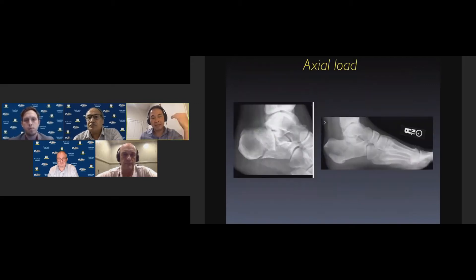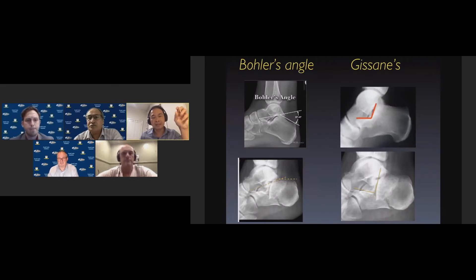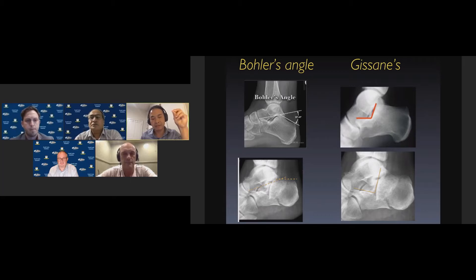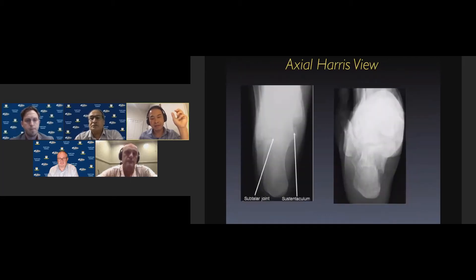Typically the mechanism of injury is an axial load where the lateral talar process is driven into the posterior facet. This can cause a joint depression fracture of the posterior facet, or if the posterior facet fragment is still part of the posterior tuberosity, then a tongue-type fracture is produced. The depression of the subtalar facet is often described in terms of Böhler's angle or Gissane's angle.